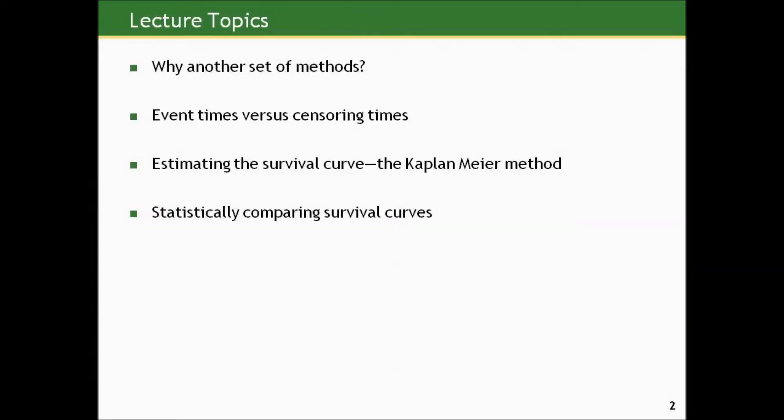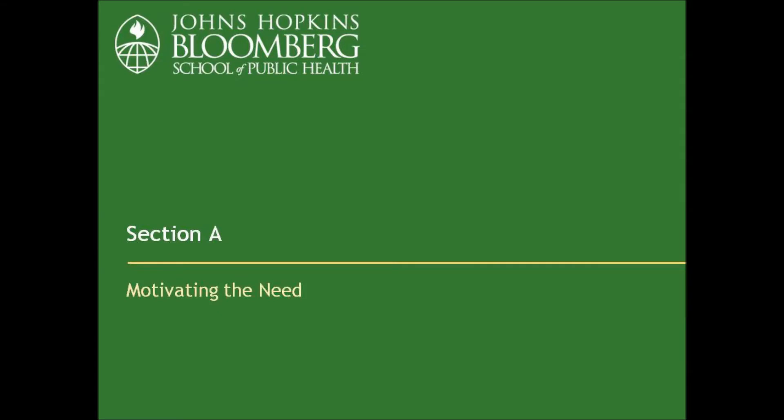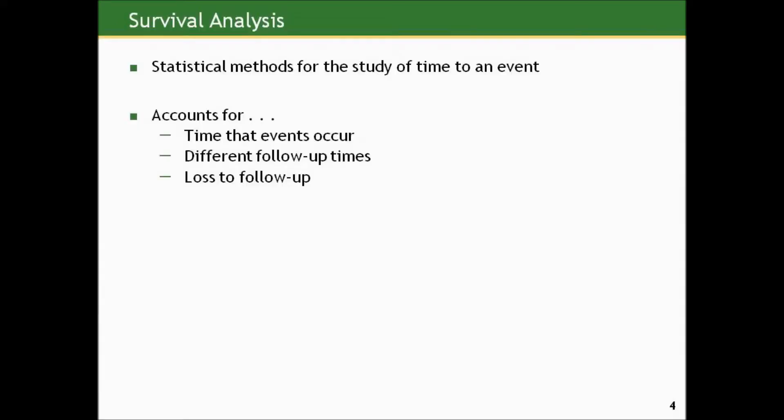We're going to consider why we need another set of methods above and beyond the ones we had for continuous and binary data when we have time-to-event data. We're going to talk about event times versus censoring times, estimating something called the survival curve using the Kaplan-Meier method, and statistically comparing survival curves. Let's start by motivating the need for yet another set of methods by defining the type of data we have in time-to-event studies.